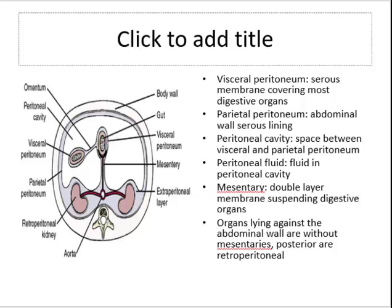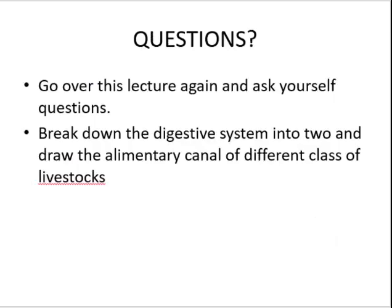Retroperitoneal organs include the duodenum, pancreas, ascending colon, descending colon, and rectum. These organs have a serosa anteriorly and an adventitia posteriorly. Go over this lecture again and ask yourself questions. Break down the digestive system into two, and draw the alimentary canal of different classes of livestock. Thank you for listening.